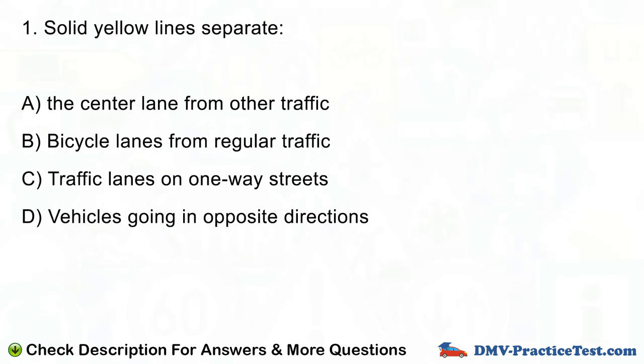Question number 1. Solid yellow lines separate. A. The center lane from other traffic. B. Bicycle lanes from regular traffic. C. Traffic lanes on one-way streets. D. Vehicles going in opposite directions.